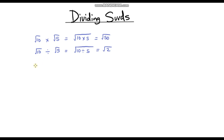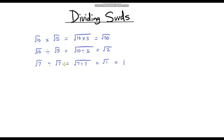Let's do another one: the square root of 7 divided by the square root of 7. Applying the same rule, this is the square root of 7 divided by 7, which is the square root of 1. The square root of 1 is just 1, so our answer is 1. You might have thought there was a shortcut — and you'd be correct — because whenever we divide something by itself we always get 1.